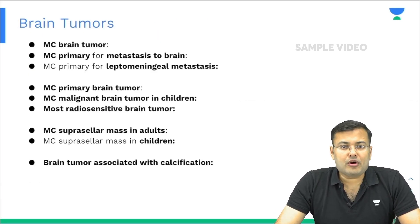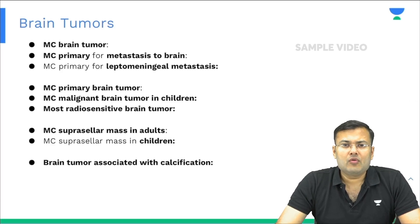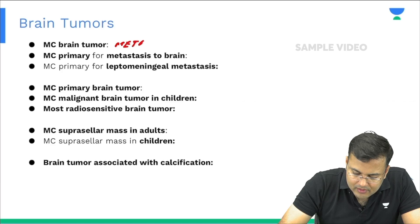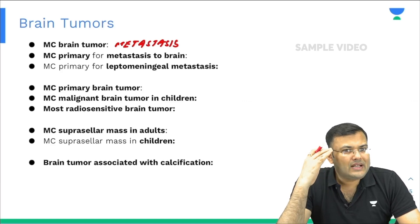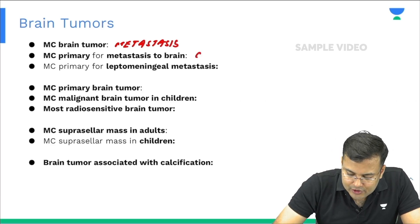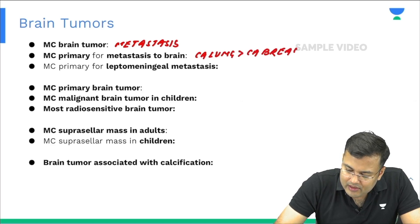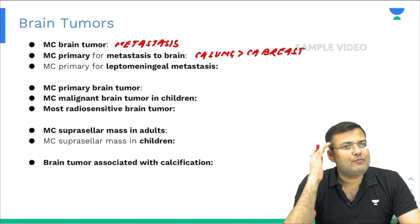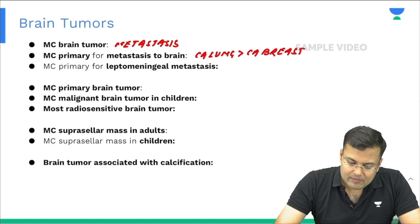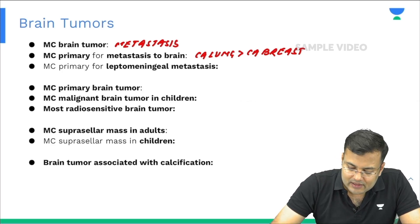Now the important one-liner questions for brain tumor. What is the most common brain tumor? It is metastasis or secondaries. Most common primary for brain metastasis is carcinoma lung, followed by carcinoma breast. Most common primary for leptomeningeal metastasis — where the meninges are involved — is carcinoma breast.